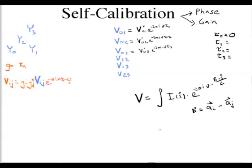If instead of an integral over the sky, we treat visibility as a sum over a few discrete sources, and we choose those sources as calibrators, each source has a separate direction. By phasing all antennas to these various sources, the different directions provide different projections of your baseline vector. You can use multiple sources on the sky to constrain your antenna position and get a better determination of it.